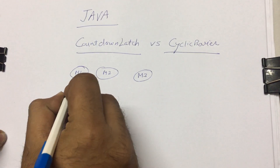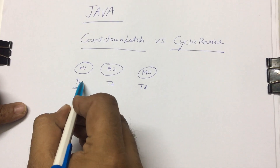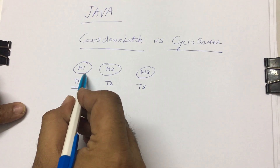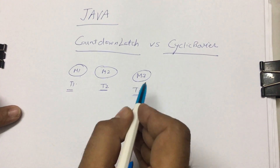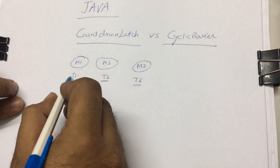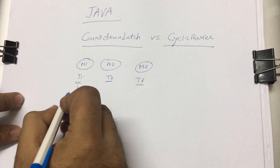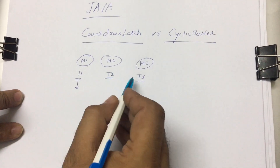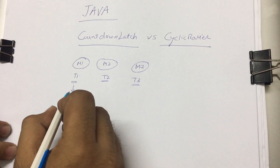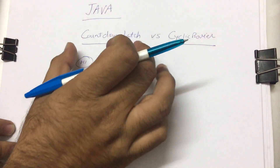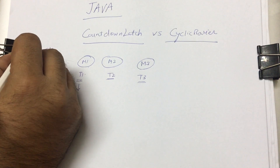You have three threads: t1, t2, and t3. t1 is calling m1 and waiting for the data, t2 is calling m2, and t3 is calling m3. All three threads hold a reference to the same CountDownLatch object — let's call it cl1.